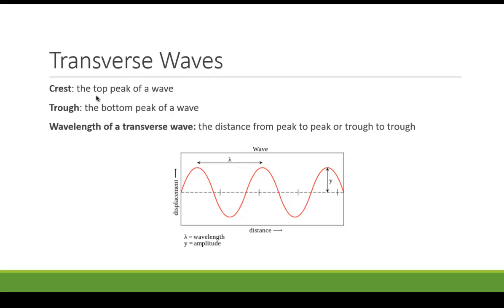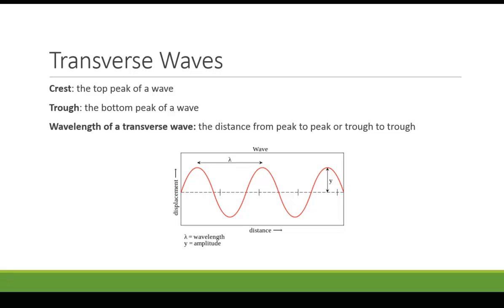Transverse wave is the type of wave that you're more used to. The crest is the top of the wave, the trough is the bottom peak of the wave. The amplitude is the distance from the equilibrium point to the top of the crest or the bottom of the trough.